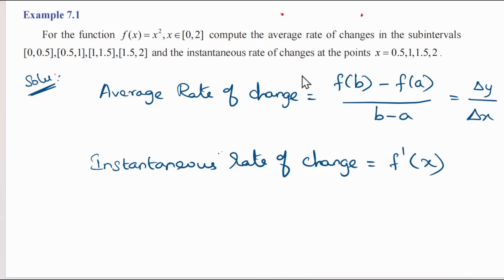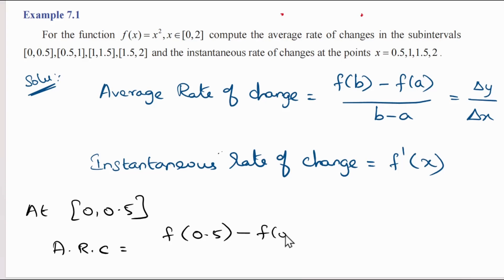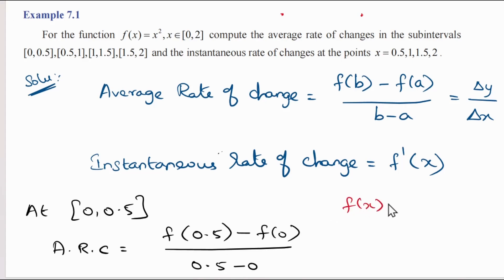First, we have the average rate of change at the interval [0, 0.5]. Average rate of change equals f(b) minus f(a) divided by b minus a, where b = 0.5 and a = 0. So we compute f(0.5) minus f(0) divided by 0.5 minus 0. Since f(x) = x², we find f(0.5) = (0.5)² = 0.25.